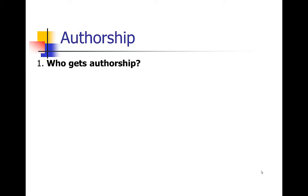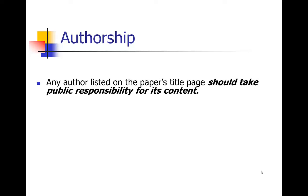There are two questions to answer with authorship. First, who gets authorship — who are you going to include as an author on your paper? The main criterion is that any author listed on the paper's title page should take public responsibility for its content. That's a fairly high bar — if you're going to be an author on a paper, you have to be willing to take public responsibility for that article's content.